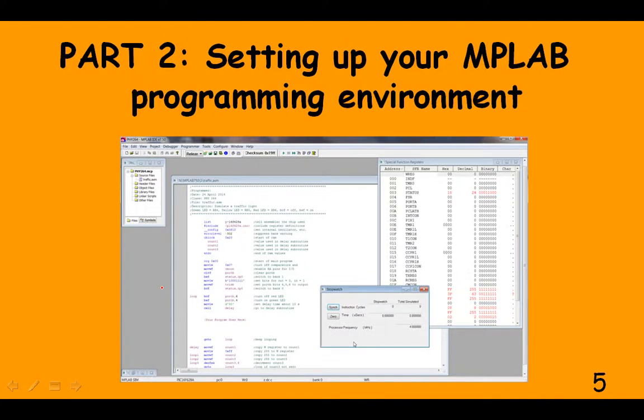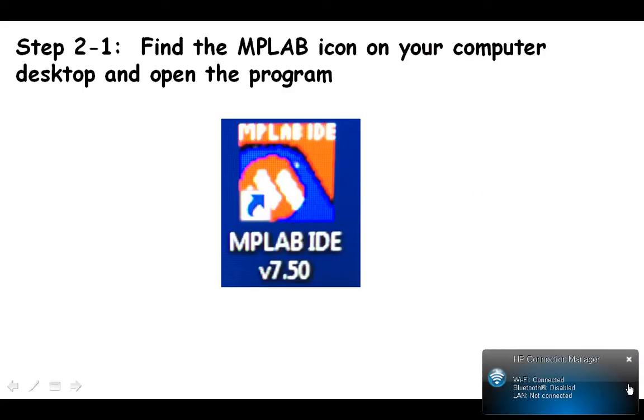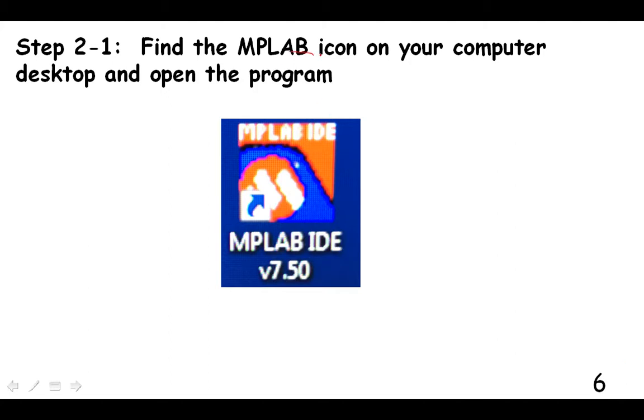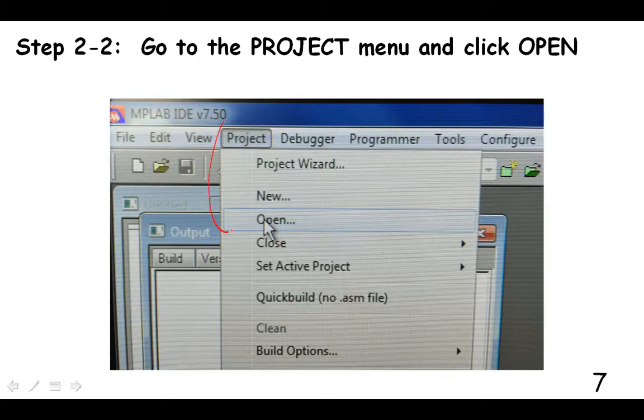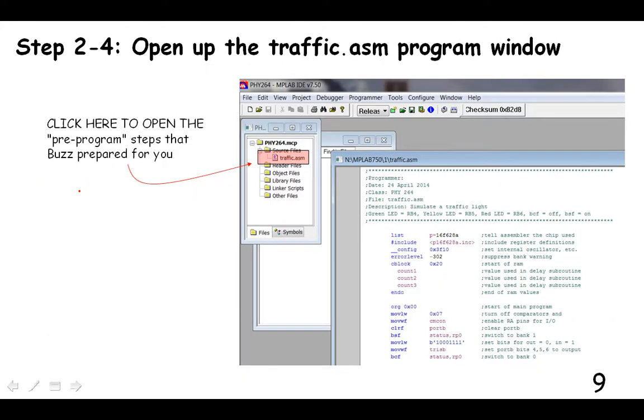Well, let's learn about setting up our programming environment in the program called MPLAB, which allows us to program this microcontroller. The first step is to find the MPLAB icon on your computer, double click it, so you open the program before you open the file. Then go into project, click open, then navigate to the thumb drive that we gave you. And if you're in section one, use folder one. If you're in section two, use folder two. And then you'll see a file in there already for you to use that was prepared for you by none other than Buzz.